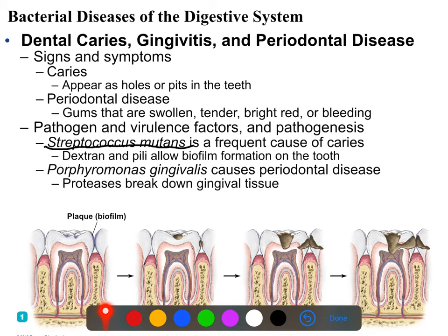Porphyromonas gingivalis - I'm just going to call that P. gingivalis here - is the common cause of gingivitis. It likes to live in between your gums and your teeth where there's a nice anaerobic environment, and it produces proteases that break down the gingival tissue, causing your gums to recede and become inflamed.